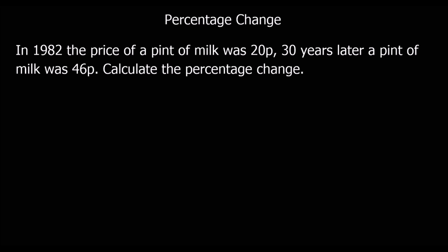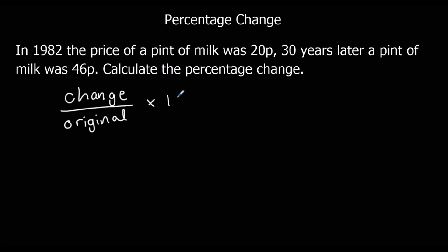Sometimes we're asked to calculate percentage change — so in percentage terms, how much has the original price gone up or down? We use a formula: we get the change, divide it by the original amount, and times it by 100 to make it a percentage. So it's what fraction the change is of the original amount, then times by 100. Change over original times 100.